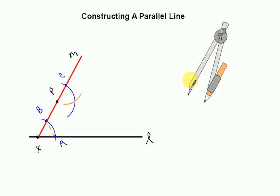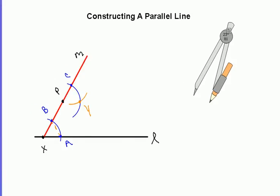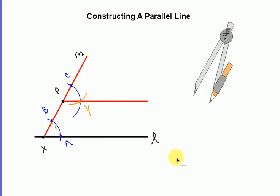Let's go ahead and label this intersection point Y. I will construct now, using my straight edge, a segment from P to Y, and it will be parallel to line L. How accurate you were in those measurements is how good and precise and parallel your line will appear to be. I'm going to go from P to Y — and that looks pretty parallel. So that is my parallel line.